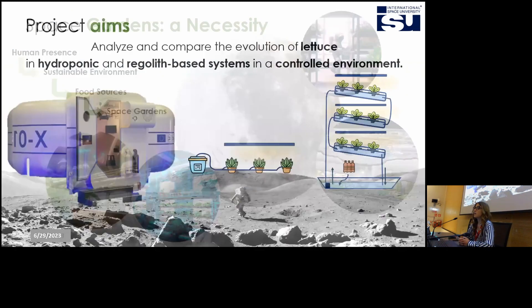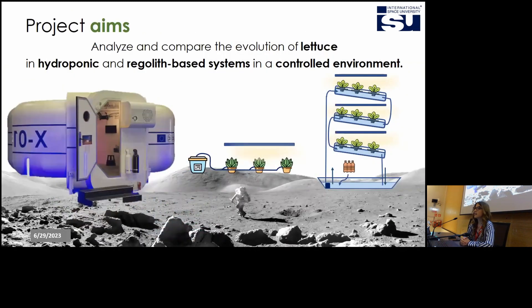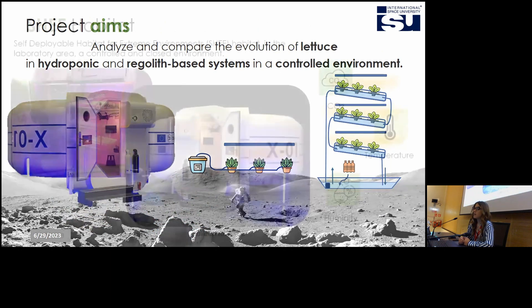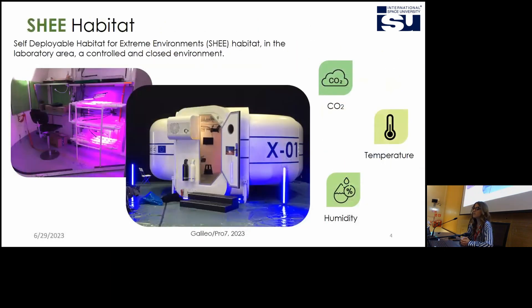The aim of this project is to analyze and compare the evolution of lettuce in hydroponic and regolith-based systems in a closed environment. The Xi environment is a self-deployable habitat for extreme environments at the International Space University, where I had the possibility to control variables as carbon dioxide, temperature, and humidity.